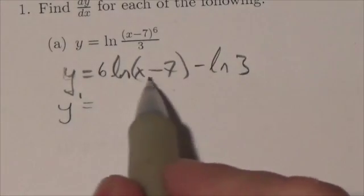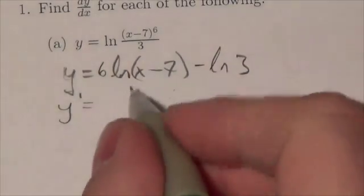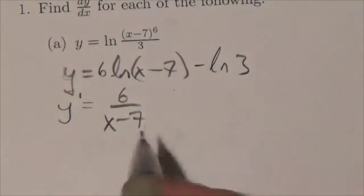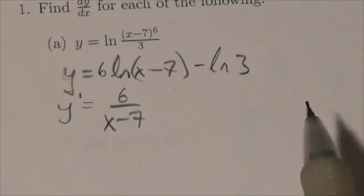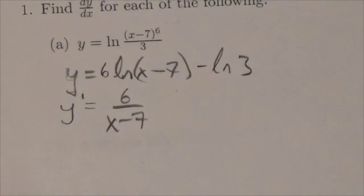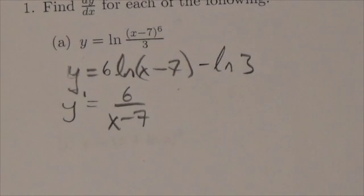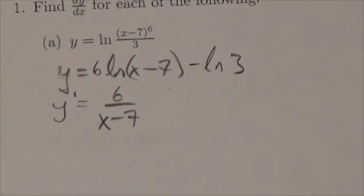The derivative of the natural log of x minus 7 will be 1 over x minus 7. So that 6 there will stay there for x minus 7, times the derivative of x minus 7, which will just be 1. And the derivative of the natural log of 3, well, it's important to remember that the natural log of 3 is just a constant. So the derivative of that will be 0. So my answer here will simply be 6 over x minus 7.